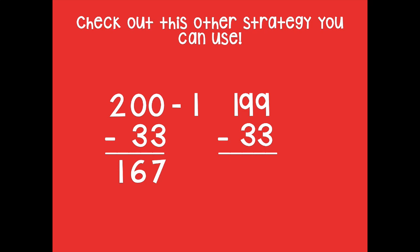Okay, so let's solve this problem here. 199 minus 33. So 9 minus 3 equals 6. 9 minus 3 again equals 6. And 1 minus 0 equals 1.